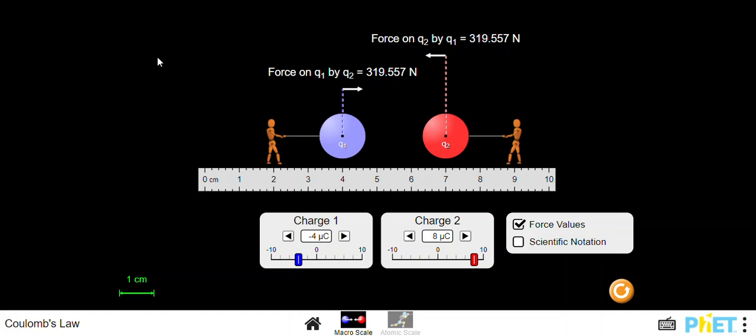In Coulomb's law the force depends on the magnitude of the charge and is directly proportional to the magnitude of the charge. So an increase in the magnitude of charge one, q1, or an increase in q2 is going to increase the magnitude of the Coulomb or electrostatic force.